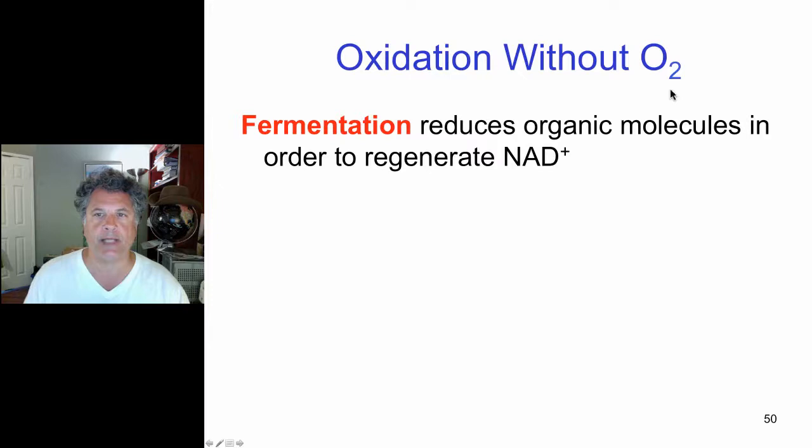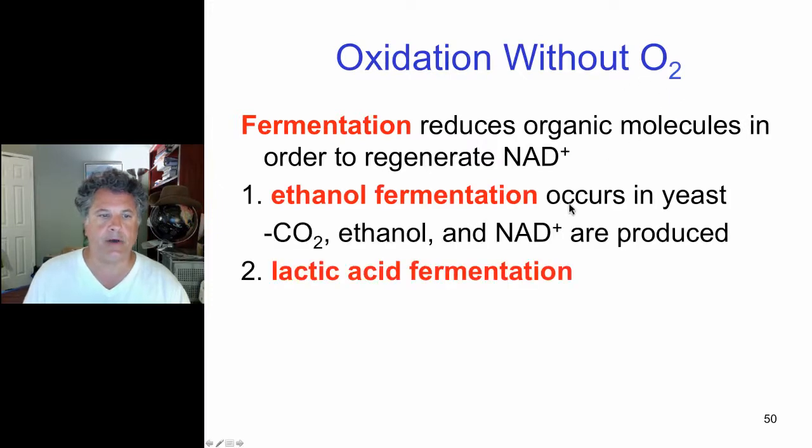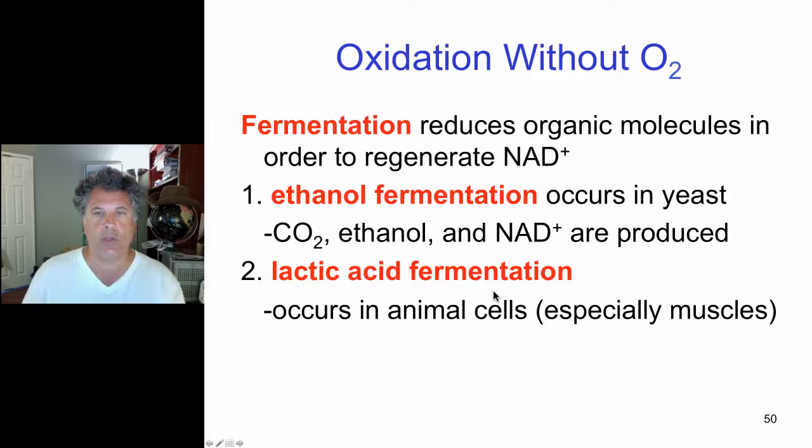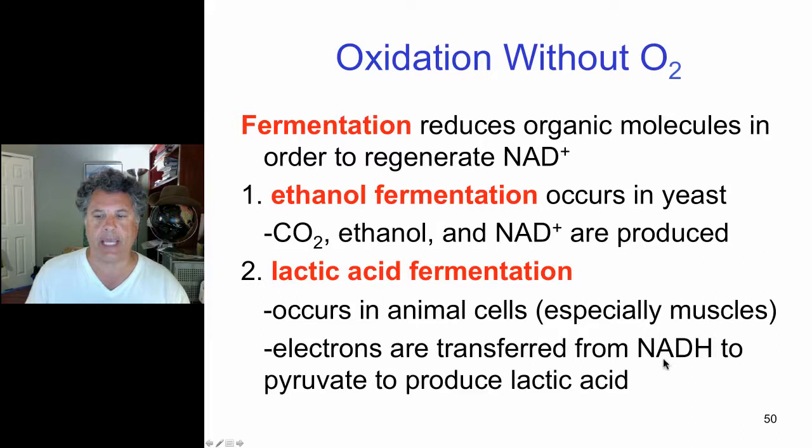Now fermentation is another example of oxidation without oxygen. So let's take lactic acid fermentation first. When you work out and your muscles are working out hard and you can't deliver enough oxygen to your muscles, they go anaerobic. And they don't have enough oxygen to run respiration. So at the end of glycolysis they take the pyruvate that is produced by glycolysis and they use that to reduce pyruvate to lactic acid. And when you have sore muscles that's because of anaerobic fermentation that's occurring in your muscles and the lactic acid causes your muscle cells to be sore.